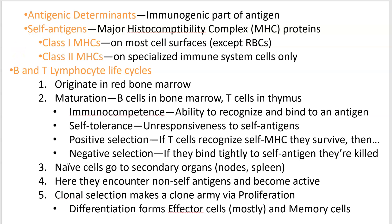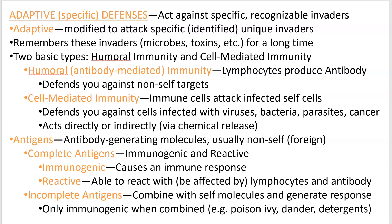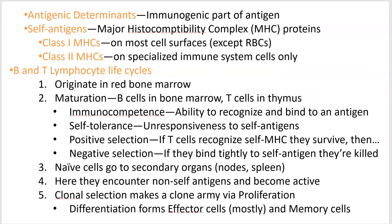So that covers the basics of the adaptive immune system and antigens. Now let's move on to the cells of the immune system — specifically B and T lymphocytes and their life cycles. Both B and T cells go through similar steps and both originate in the red bone marrow.